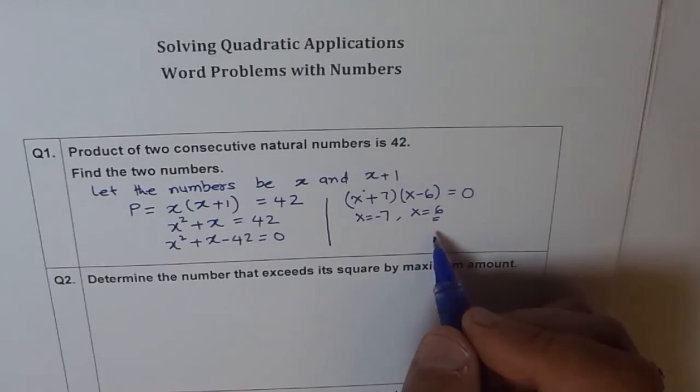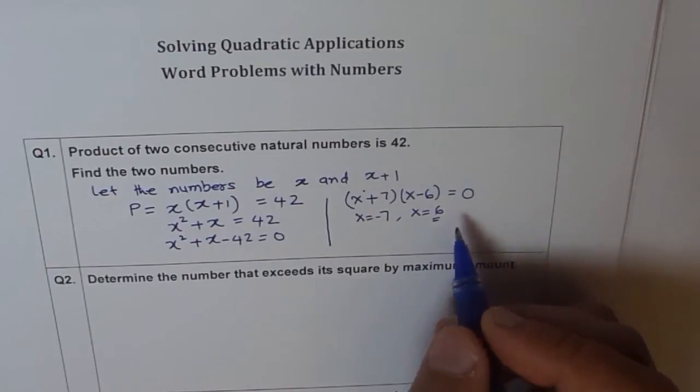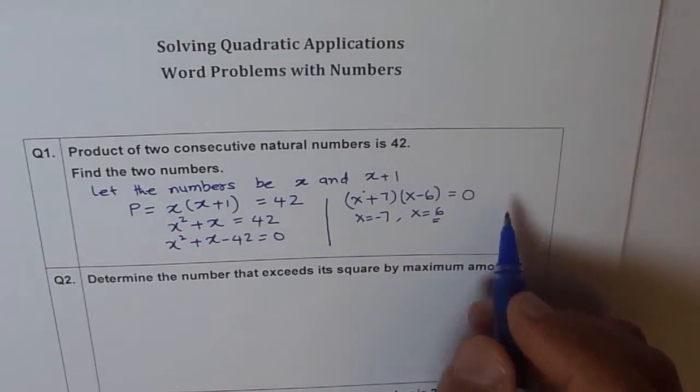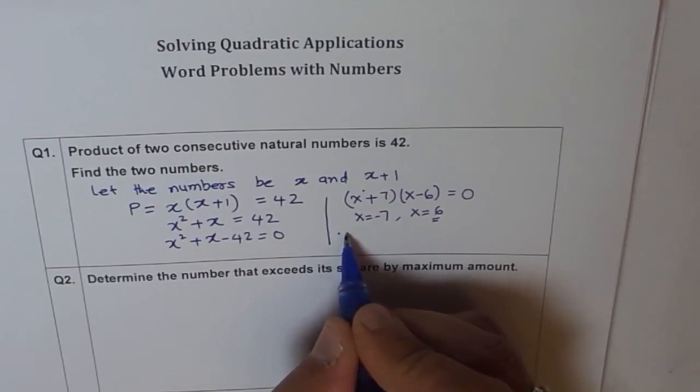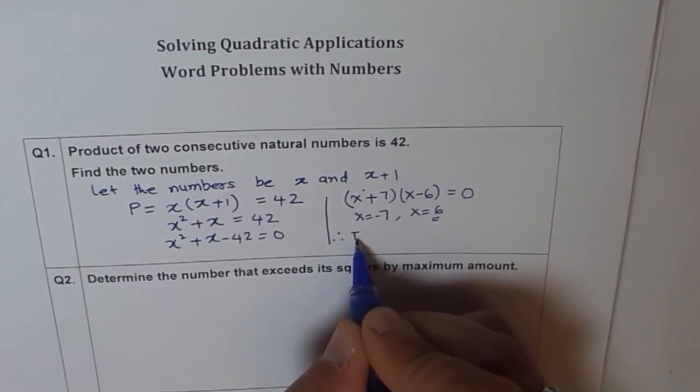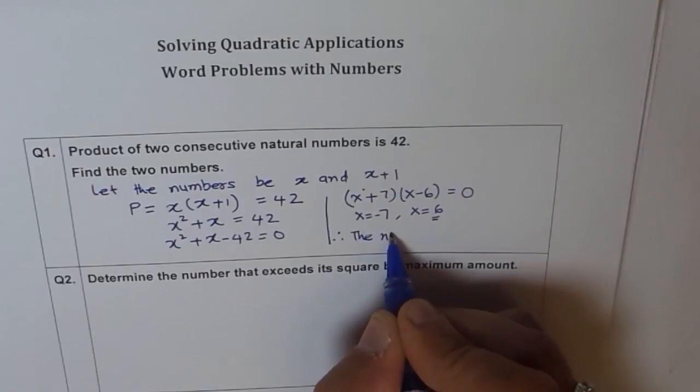So what is the value of the other number? The other number is 7, x plus 1. Do you get it? So the two numbers are, therefore, the numbers are 6 and 7.